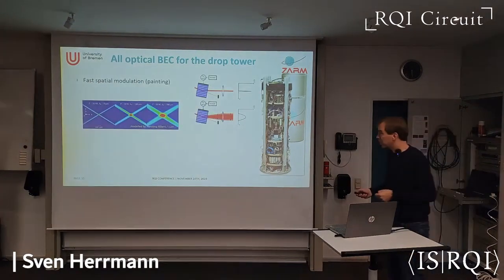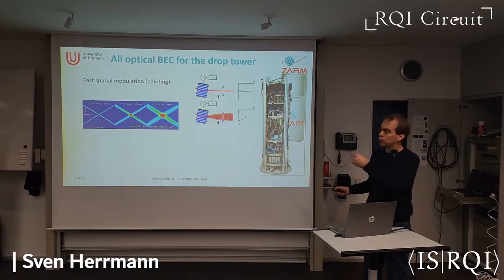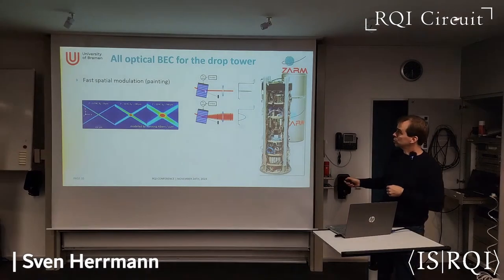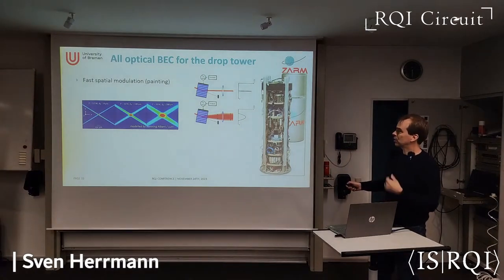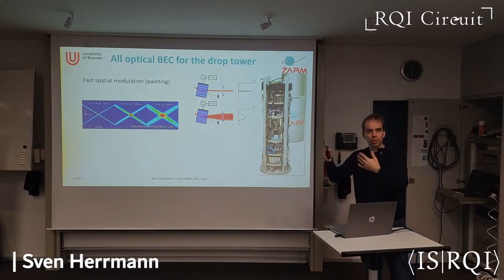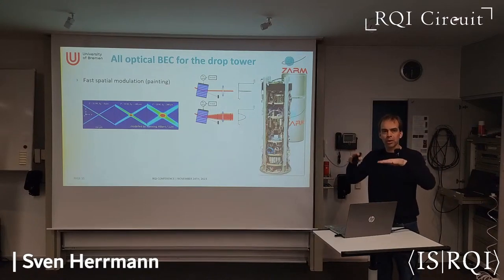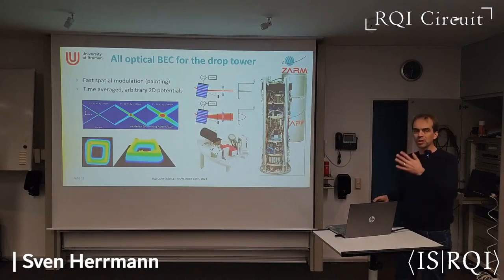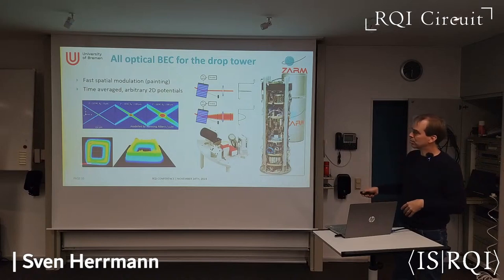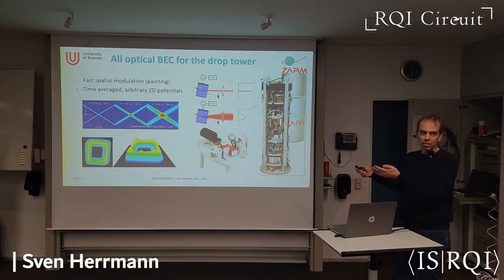One approach that may help is using time-averaged potentials. Colleagues in Hanover, including Henning Albers, have worked on this extensively. You use an acousto-optic modulator to very rapidly dither the beam, painting an average potential of any shape — for example a nice harmonic potential — giving an additional degree of freedom beyond laser power to enhance evaporation. We have now implemented a 2D spatial modulator, allowing modulation in two directions, enabling 2D painted potentials. We can see the resulting light intensity distributions directly.